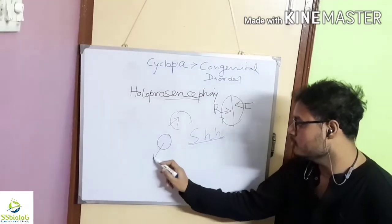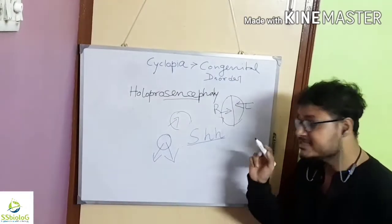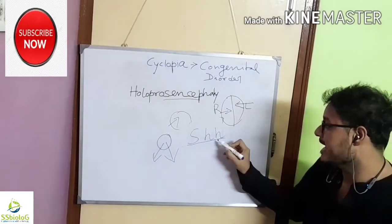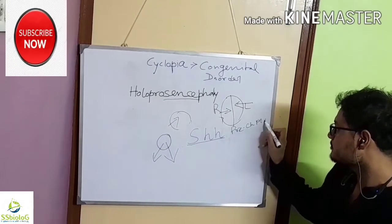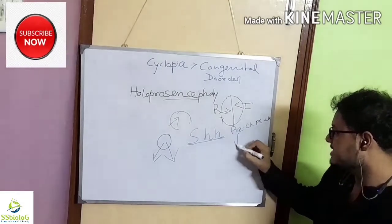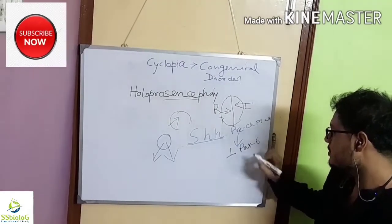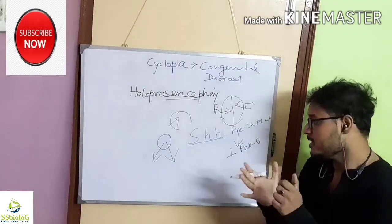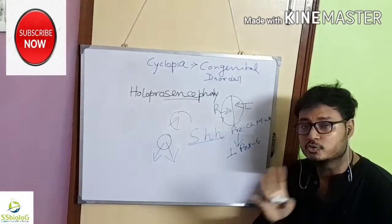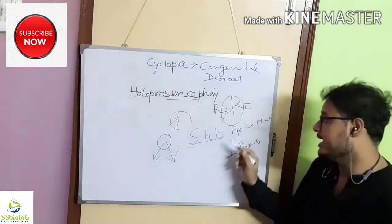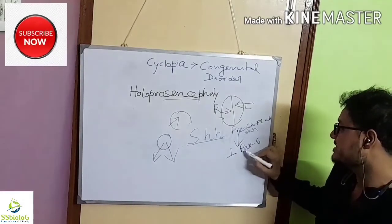It is said that sonic hedgehog, when emitted from the prechordal plate, suppresses the one eye field, which causes the one eye field to divide into two bilateral eye fields. So when sonic hedgehog is emitted from the prechordal plate, it suppresses Pax6.